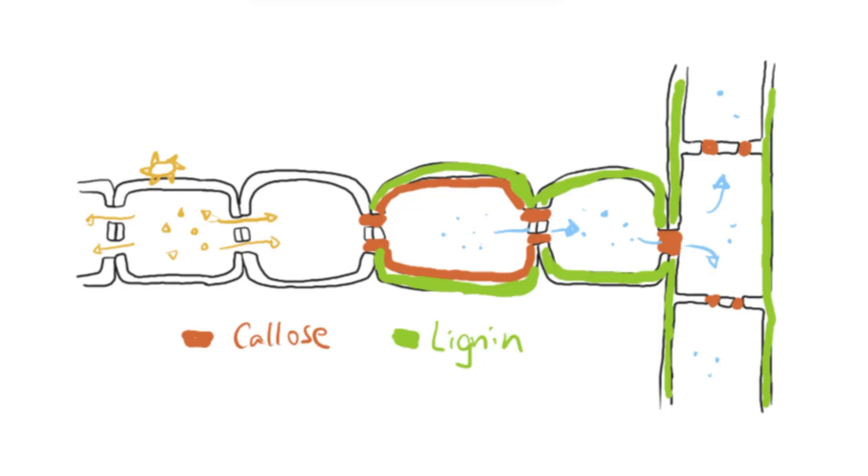For example, one cell is signaled by an infected cell that they're under attack. Once they form their defensive layers, they pass on the signal to the next cell, which starts building their callose and lignin layers, and this signal goes through the phloem and xylem to the rest of the plant. It's almost like a chain effect or cascade effect.